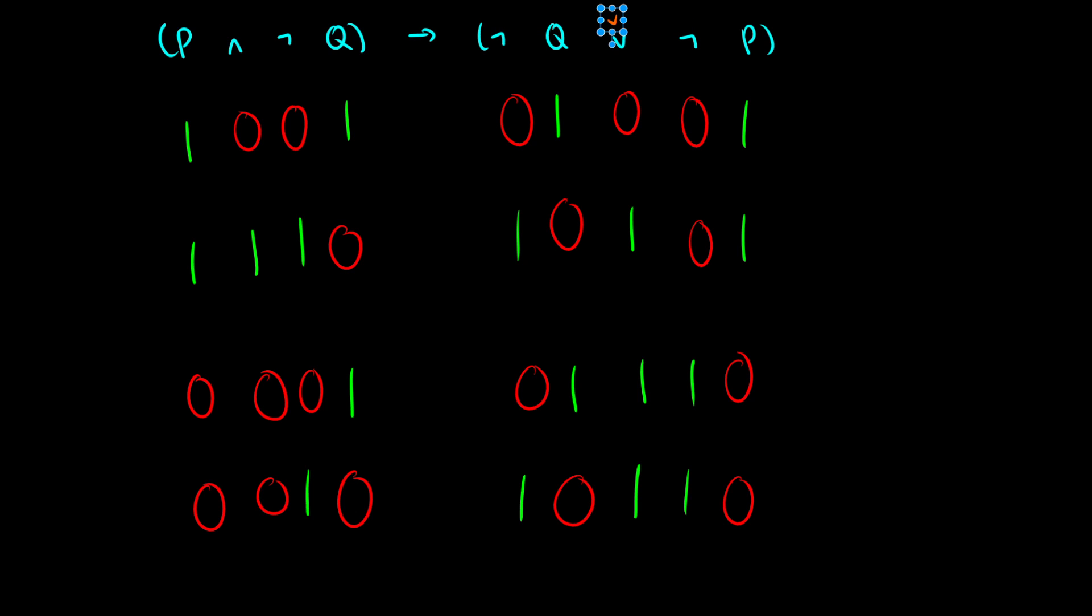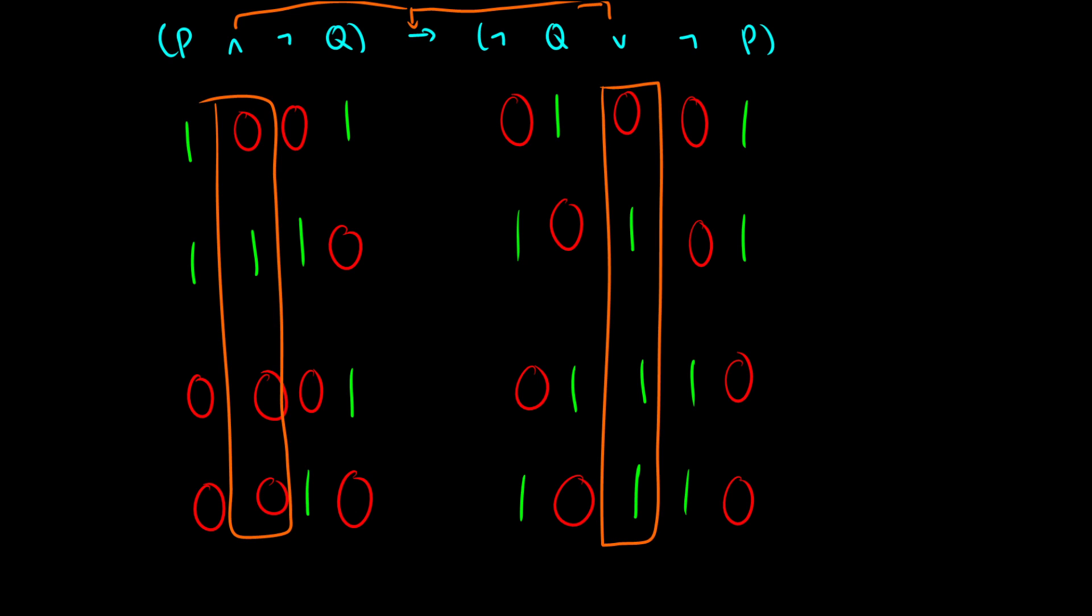Okay, finally, we'll take a look at the main connective, which is the conditional. That's going to grab information from the and on the left and the or on the right. So I'm going to put these boxes in orange, so that way I know exactly which columns I'm taking my information from. So I'm comparing these two. So remember, the arrow is only false if we have 1 arrow 0, otherwise it's true. So in the first row, we have 0 arrow 0, so that's going to be true. In the second row, we have 1 arrow 1, that's true. In the third row, we have 0 arrow 1, that's true. And in the fourth row, we have 0 arrow 1, which is also true. So, in the end, we find that no matter what the values of P and Q are, the entire well-formed formula is true.